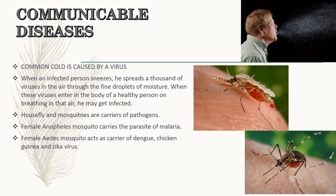Some diseases are caused by carriers. There are insects in our environment which transfer disease-causing microbes into our body. The two most common such insects are the housefly and the mosquito. The insect which transmits disease-causing microbes to humans without itself suffering from the disease is called a carrier. Flies sit on garbage and animal excreta, and pathogens stick to their bodies. When the same flies sit on uncovered food, they may transfer the pathogens.